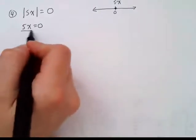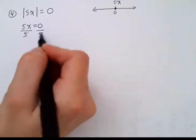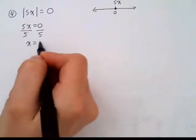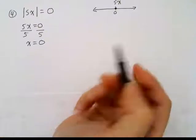So here we only have one equation. Solve this equation by dividing by 5 on both sides, x is equal to zero. So we only have one solution in this case.